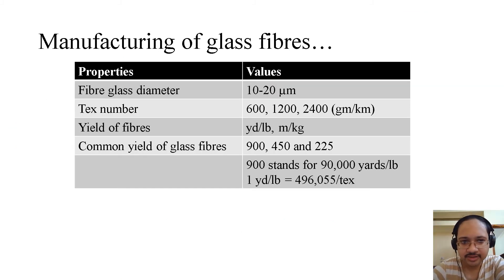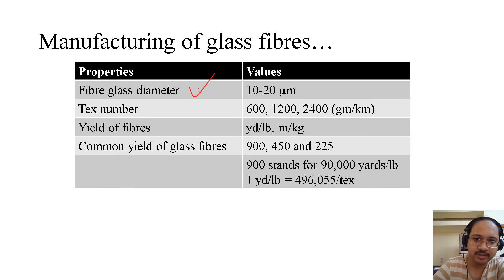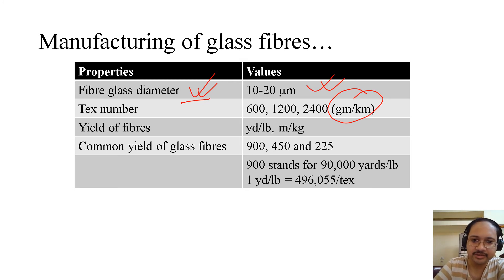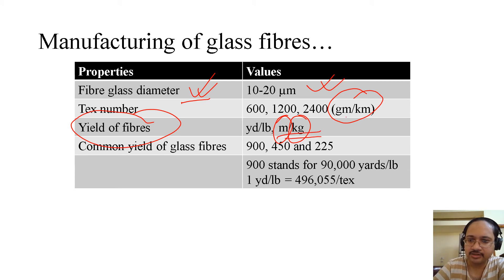Now, glass fibers, their properties and values. You don't need to memorize this in detail, but have a good understanding of the typical characteristics. Fiberglass diameter is typically 14 microns, with a range of 10 to 20 microns. Tex number is 600, 1200, or 2400 grams per kilometer — carefully remember the unit, it's grams per kilometer. Yield of fibers refers to how many meters we can produce out of a lot.